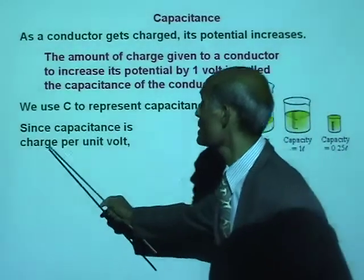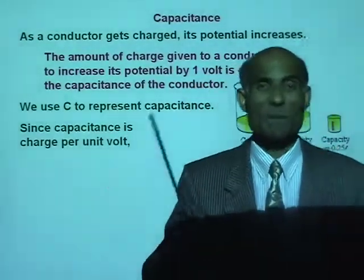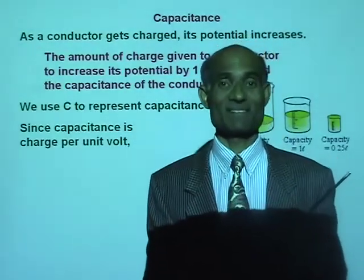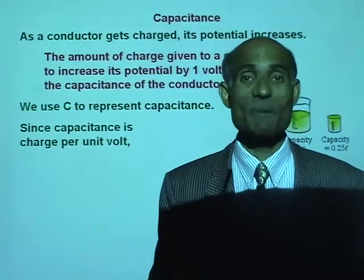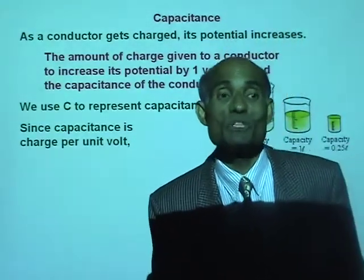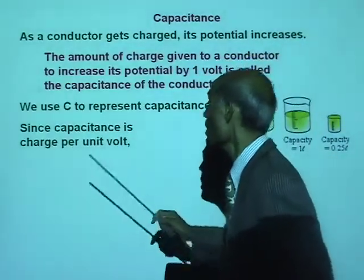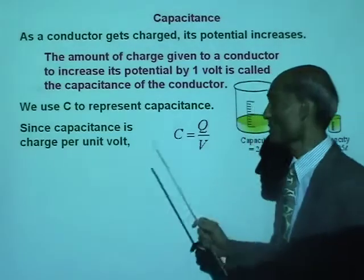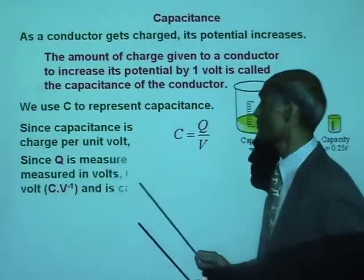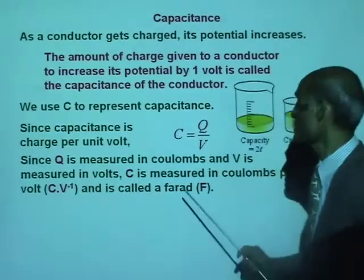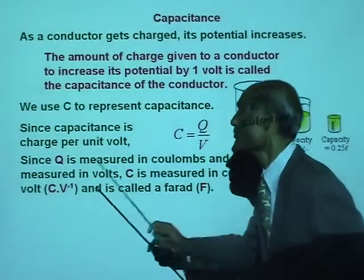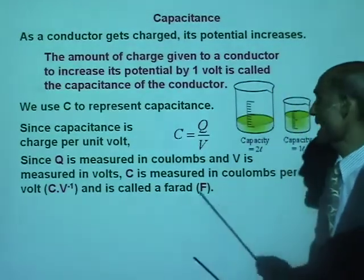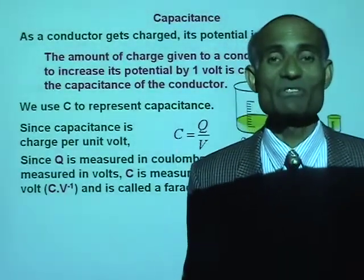Since capacitance is charge per unit volt, the amount of charge needed to increase the potential by 1 volt, its unit will be charge per unit potential difference, or coulombs per volt. So C = Q/V. That's the way we define capacitance — charge per unit volt. Its unit is coulombs per volt, and this has a special name: coulombs per volt is called a farad. The unit of capacitance is a farad.